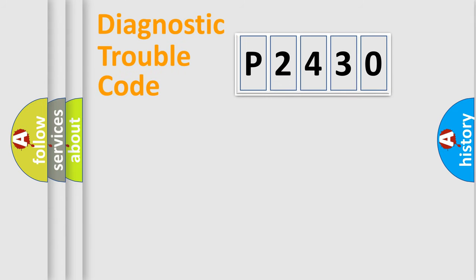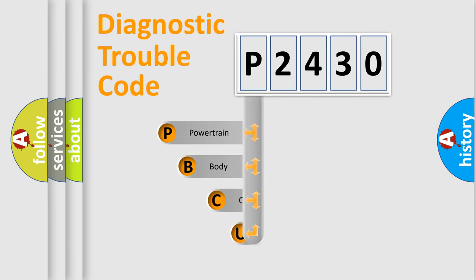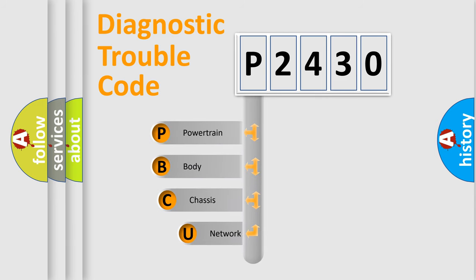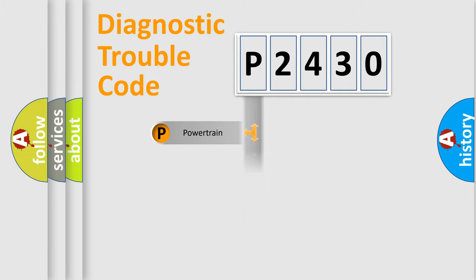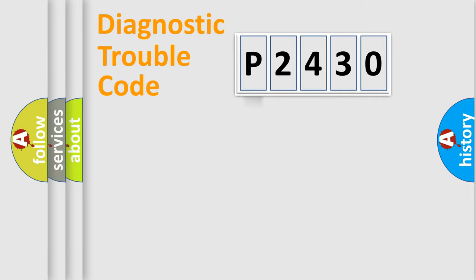Let's look at the history of diagnostic fault code composition according to the OBD2 protocol, which is unified for all automakers since 2000. We divide the electric system of the automobile into four basic units: Powertrain, Body, Chassis, and Network.